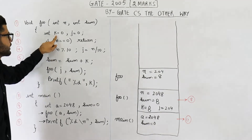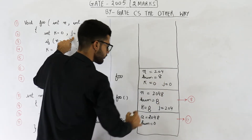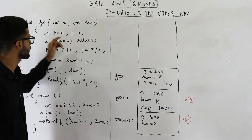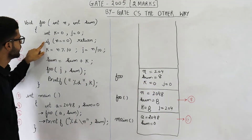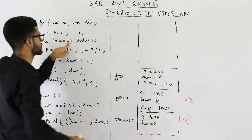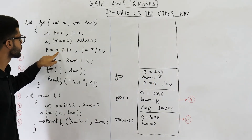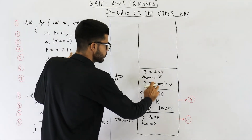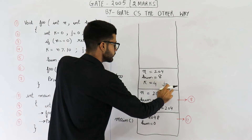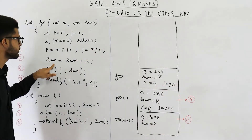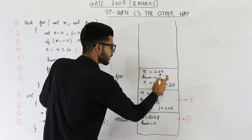This is a new function call, so we start executing all of foo's lines again. Declaring k and j. Then: is n == 0? No, n is 204. So we cannot return. Then k = n % 10: 204 % 10 gives 4, so k = 4. Then j = n / 10: 204 / 10 gives 20, so j = 20. Then sum = sum + k: sum is 8 + 4 = 12. Update sum to 12.